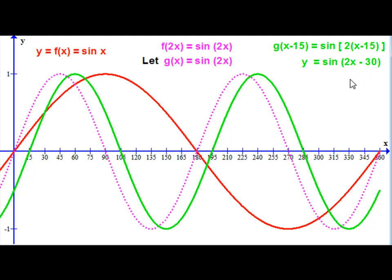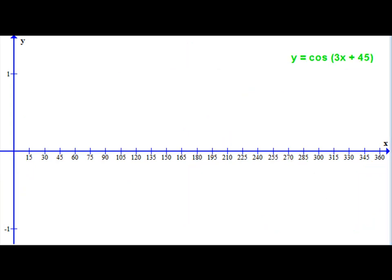So I hope you've been able to follow that. As I said at the beginning of the tutorial, what I'd like to do is give you one to try, and then I'll run through it afterwards. What I'd like you to do is see if you could sketch the graph of y equals the cosine of 3x plus 45 degrees. You might like to pause the video, and when you're ready, come back and I'll take you through it and you can check your answer.